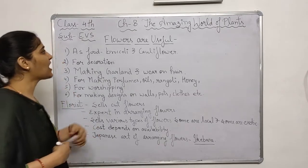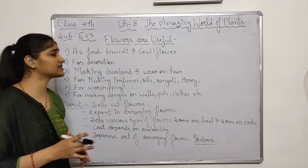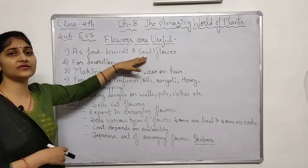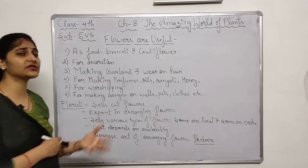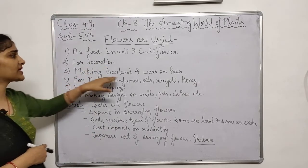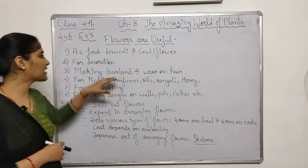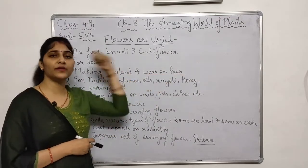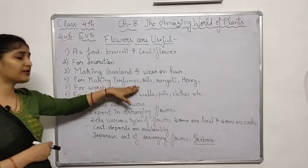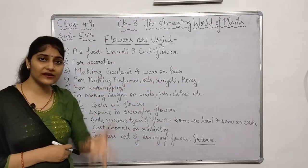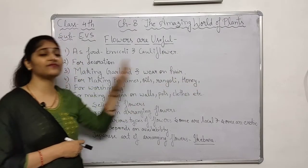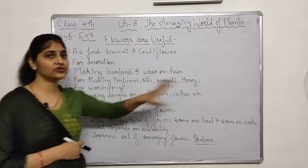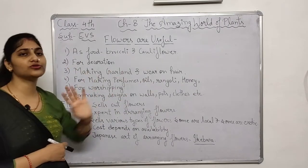Flowers are useful in many ways. They are used as food — broccoli and cauliflower are flowers that we eat. Flowers are used for decoration at marriages, parties, and temples. We also use flowers for making garlands and some people wear them in their hair. Flowers are also used for making perfumes, oils, floral rangoli, and for making honey. Honey bees collect nectar from flowers and use it to make honey.